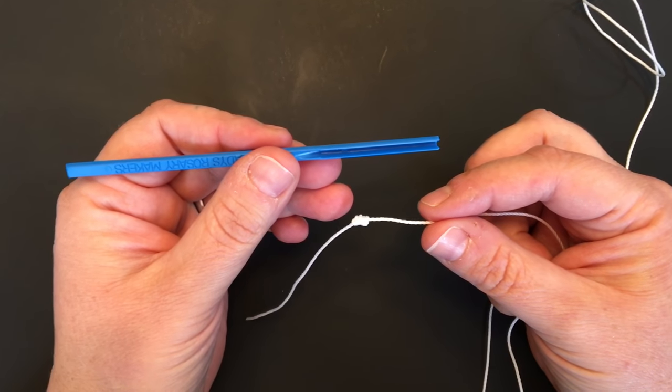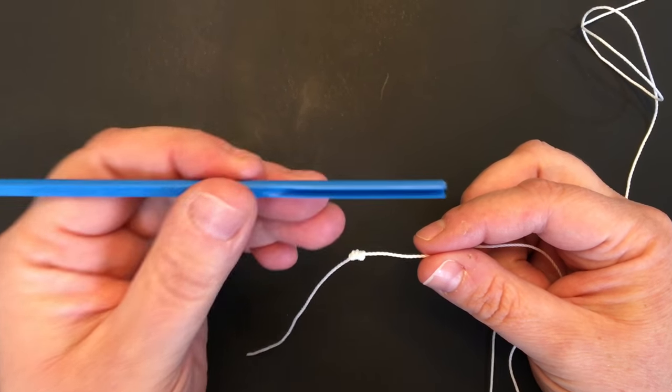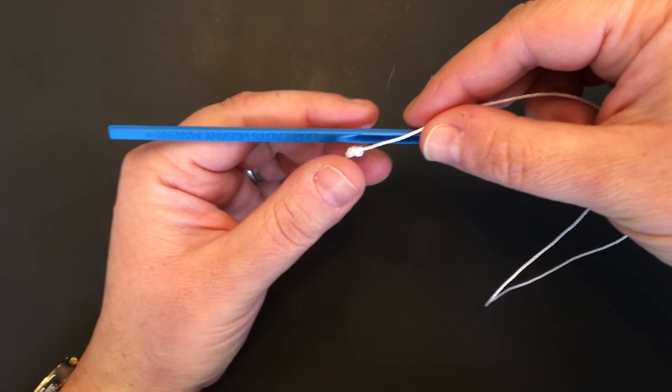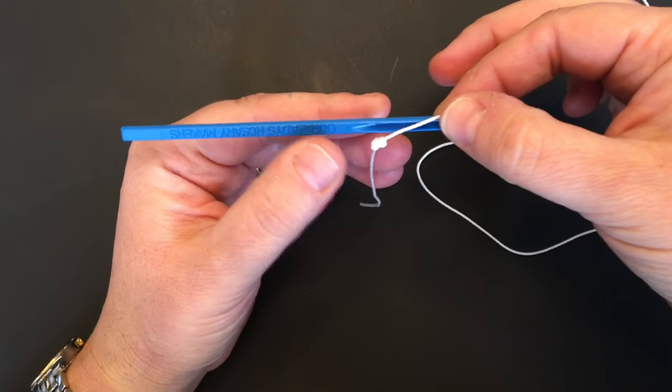The first step in making a barrel knot is to place the cord over the tool right over the edge of the groove.